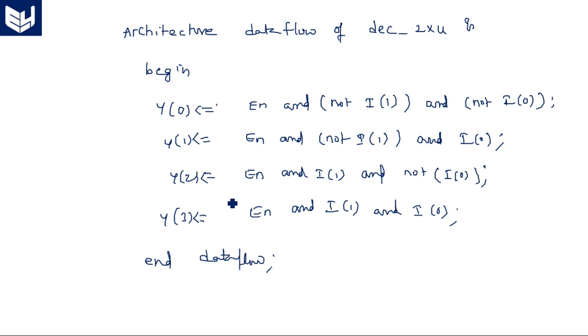To summarize the dataflow approach: if you know the Boolean expression, directly convert it to code by changing the AND gate dot-product notation into the 'and' operation and the complement into the 'not' operation. Now we move on to the behavioral model.